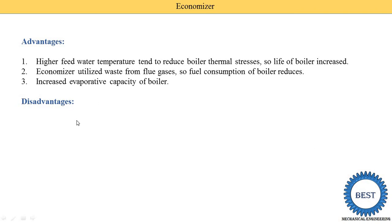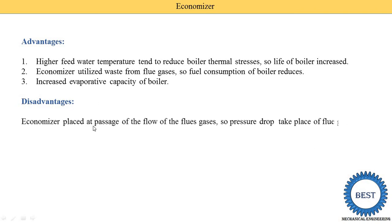The disadvantages of the economizer are: the economizer is placed at the passage of the flow of flue gases, so a pressure drop takes place in the flue gas and there is a loss of draught. To compensate for this, we are required to put a fan in the flow of the exhaust gases. This is the disadvantage of the economizer.